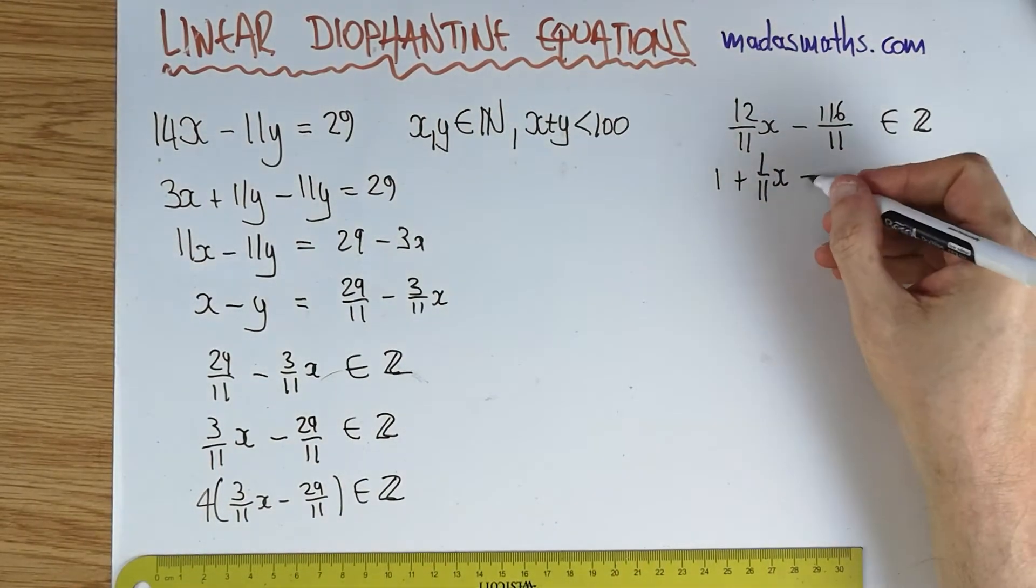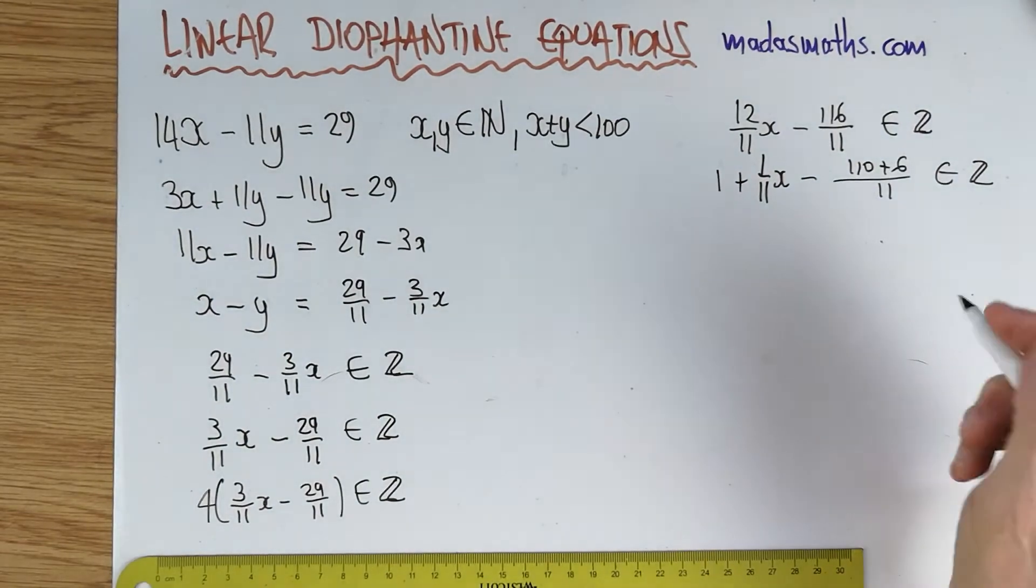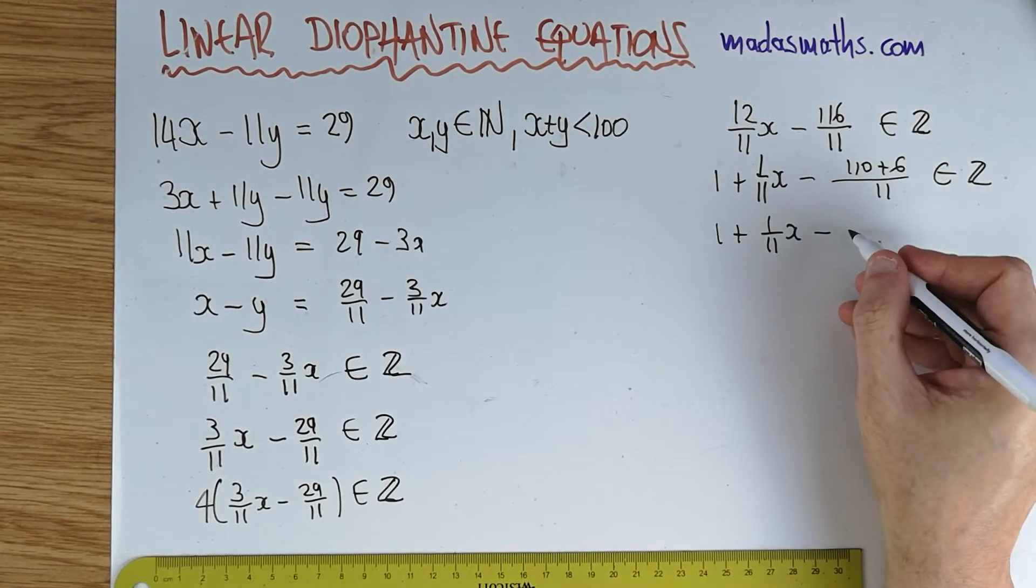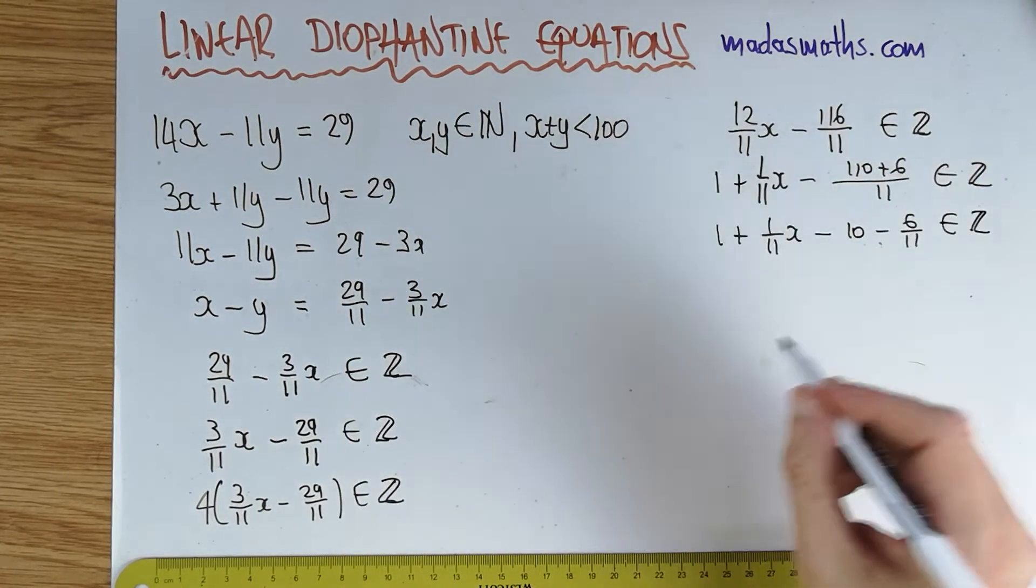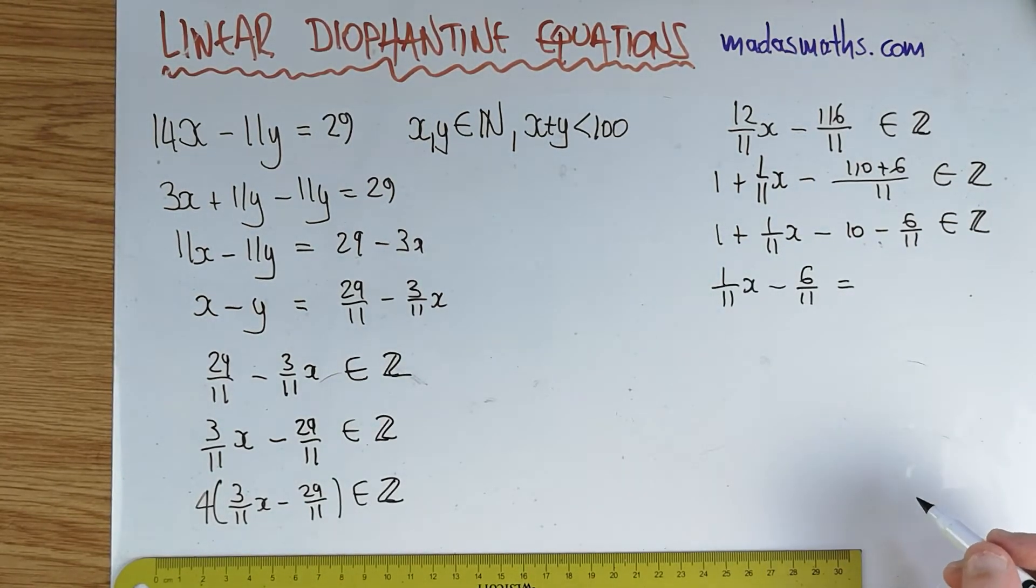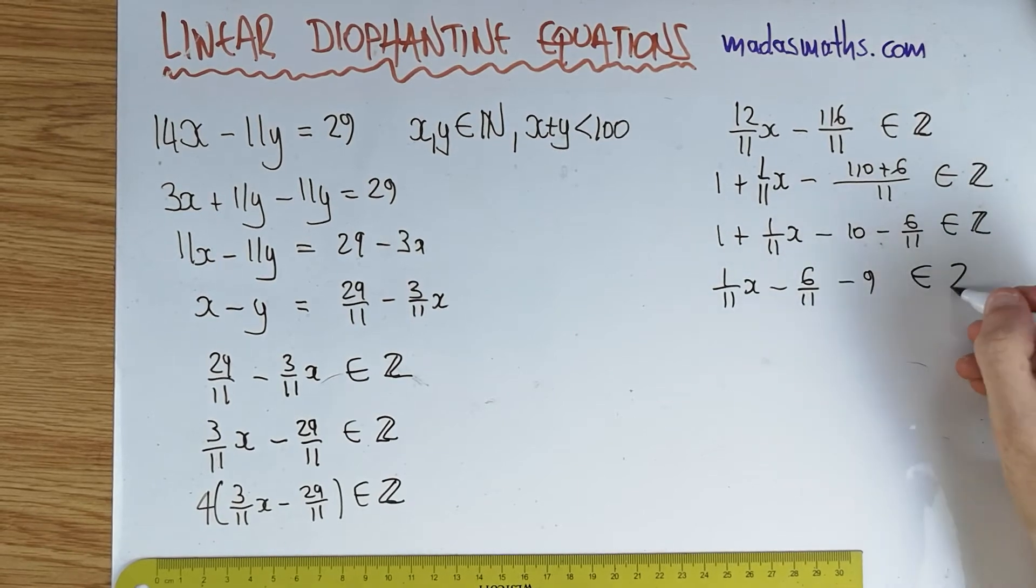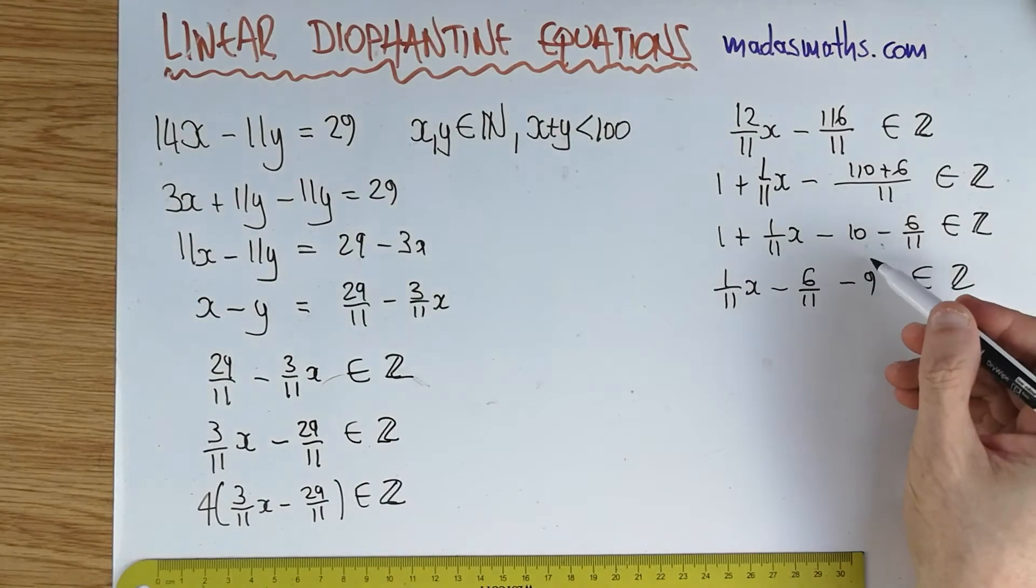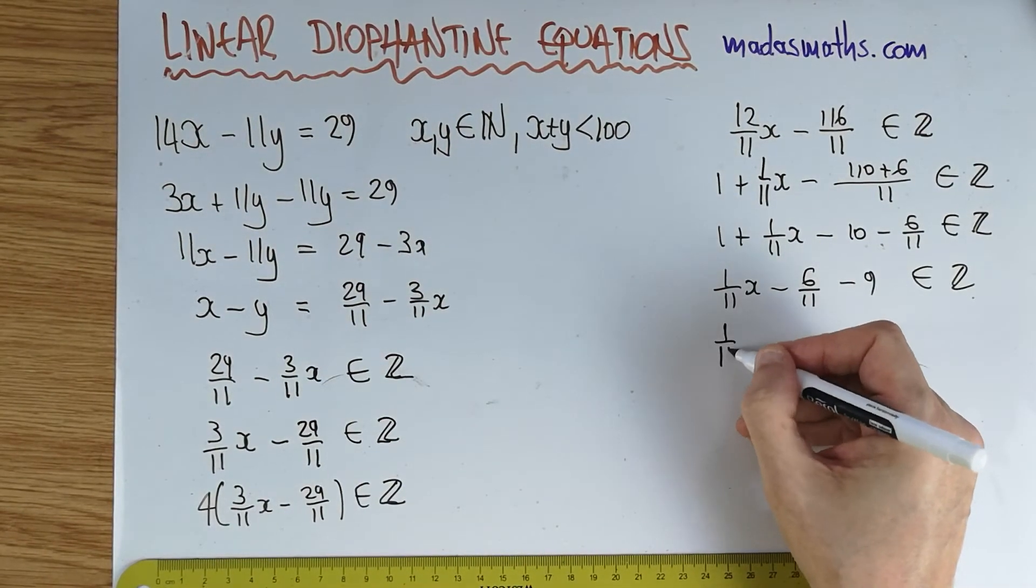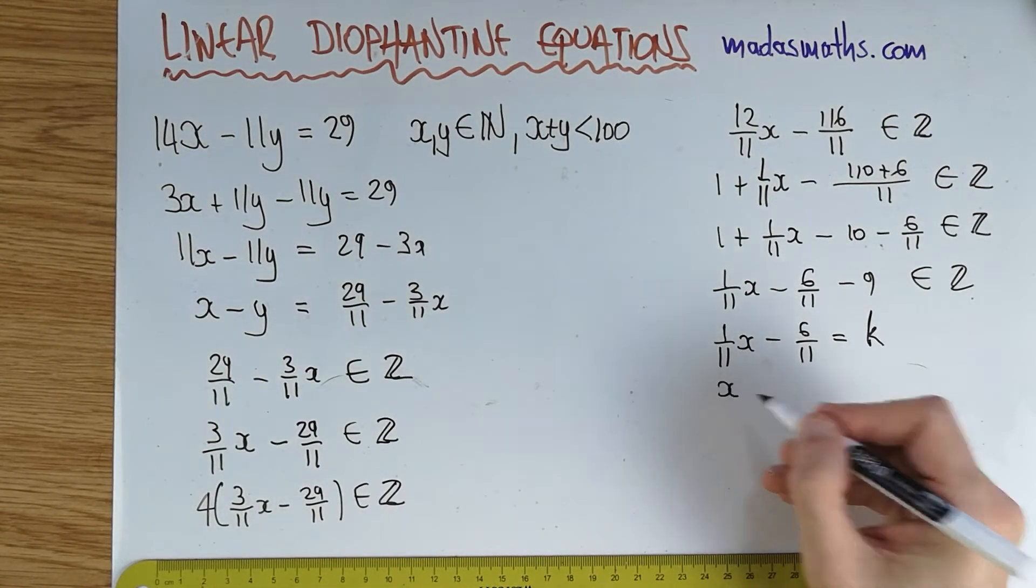And the 116 divided by 11, 110, so that's going to be minus 10 plus 6 over 11. So I can actually say 1 plus 1 over 11 x, split that again. So that's going to be minus 10 minus 6/11 belongs to Z. And I can say 1/11 of x minus 6/11 is equal to minus 9 belongs to Z. And let's look at this expression. This is an integer. This is an integer on this side. Therefore, in order for overall being an integer, this must also be an integer. And at this stage, and only at this stage, I can name my integer and go back to an equation. So this is equal to k.